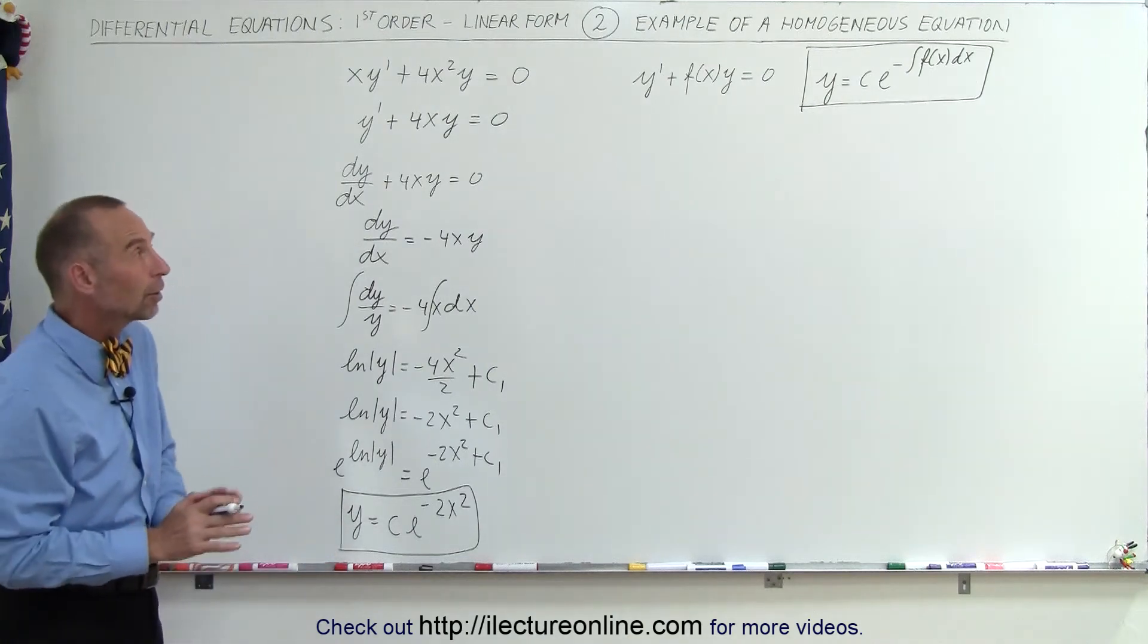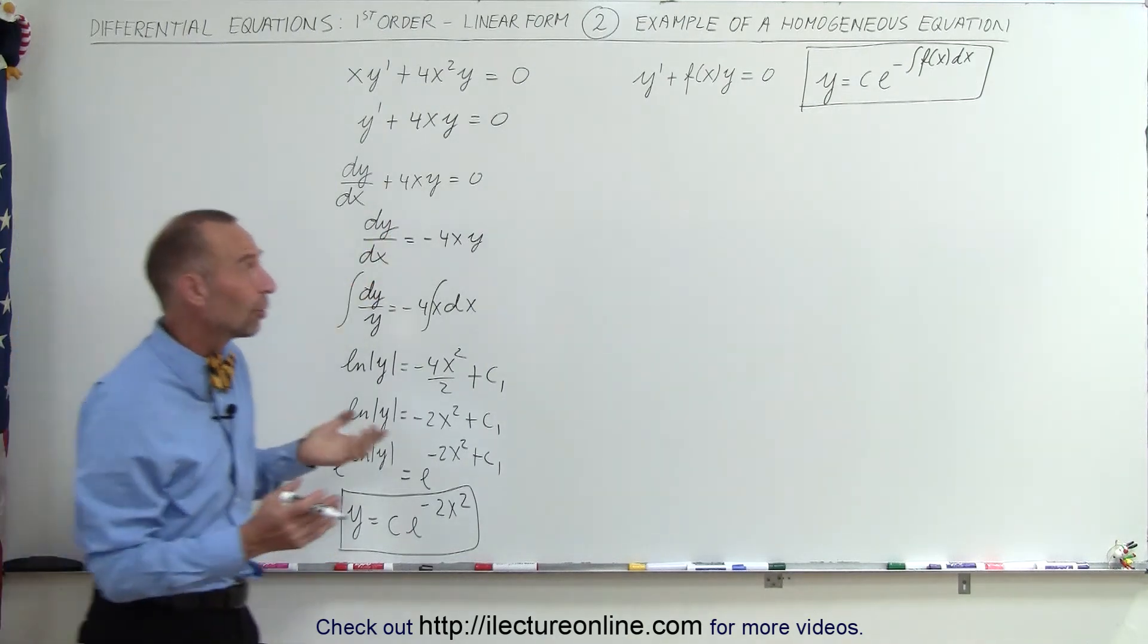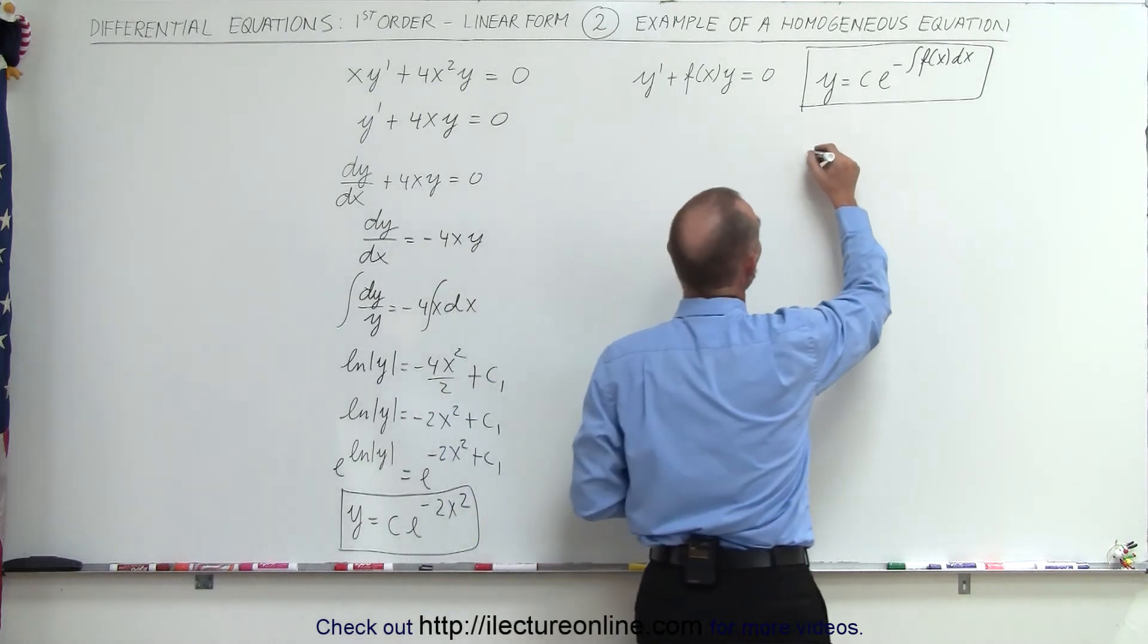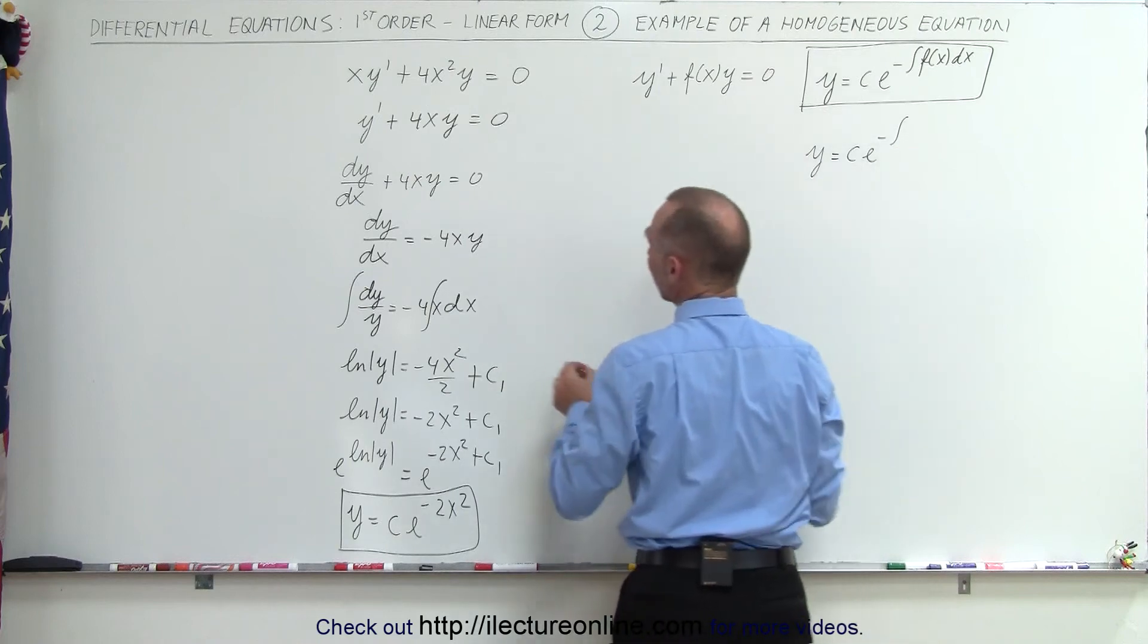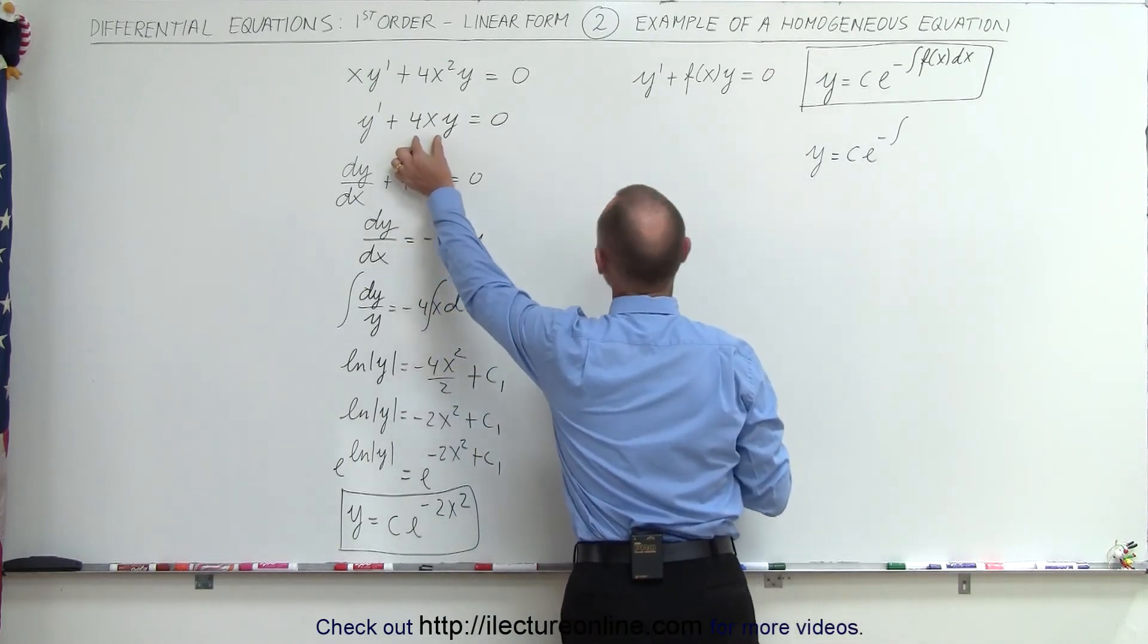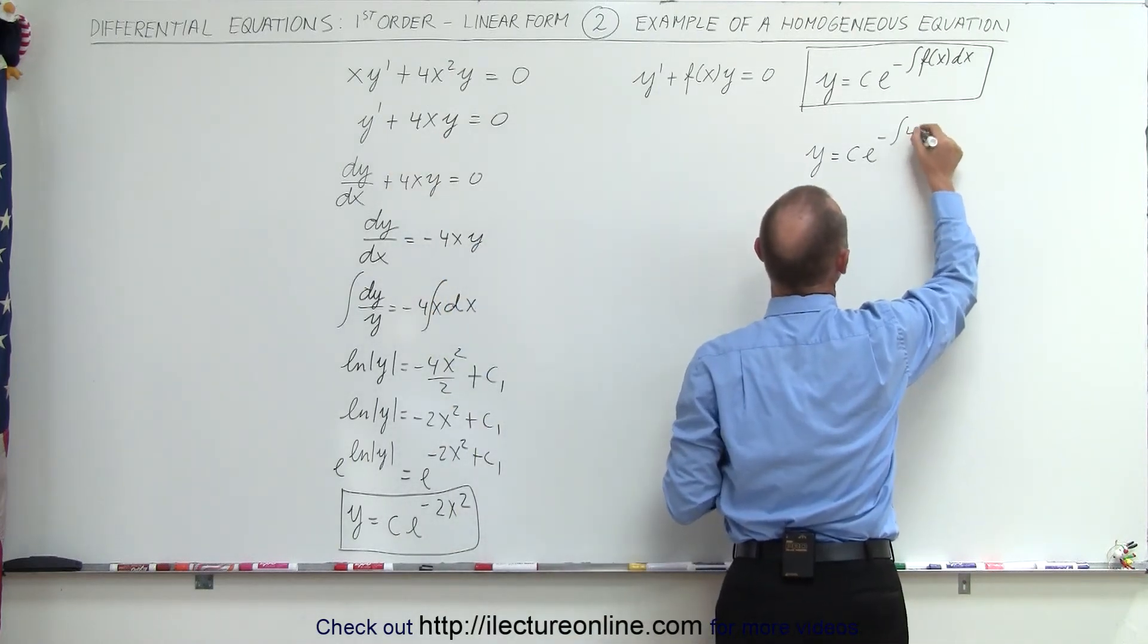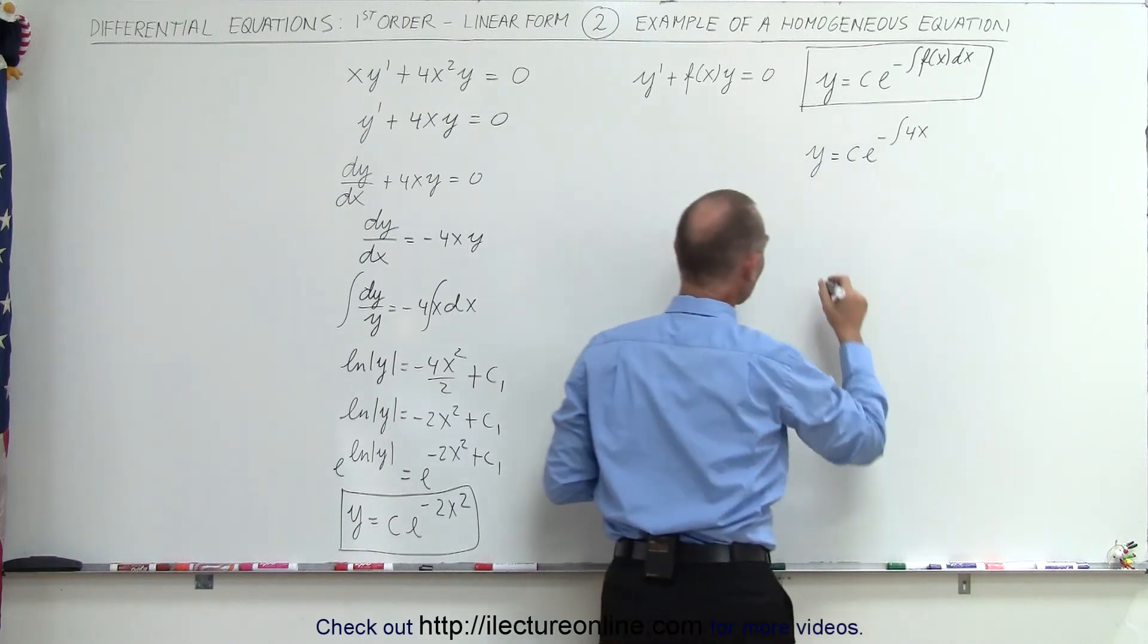Now what we could have done is simply taken the general form and said the solution must look like y equals c e to the negative integral of f(x). I realize that f(x) equals 4x, so I plug in 4x like this.